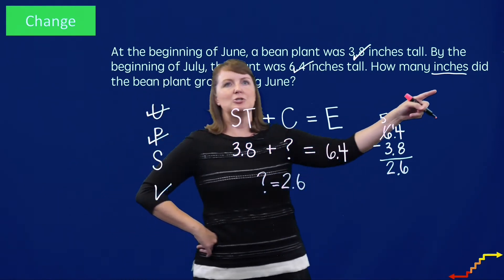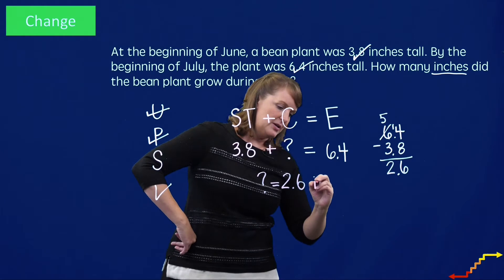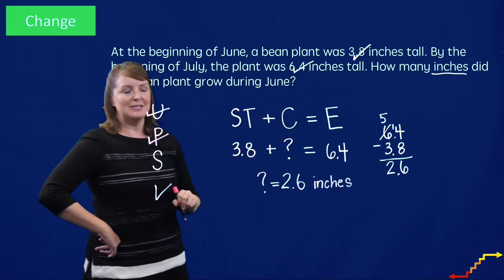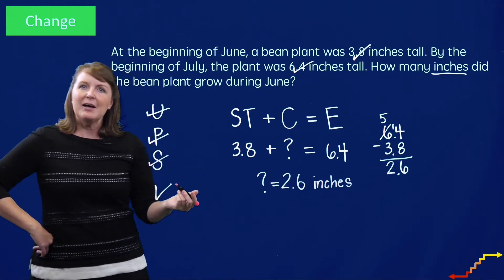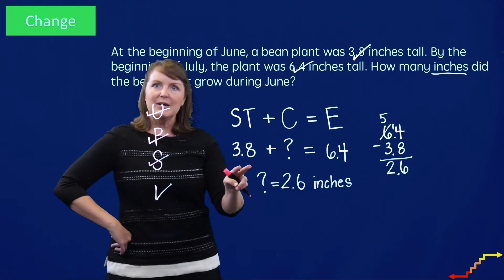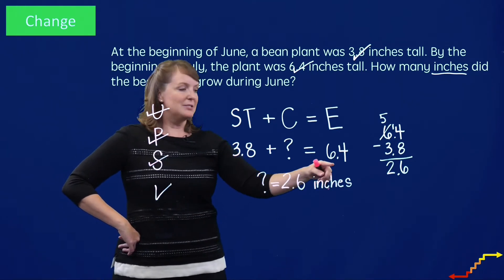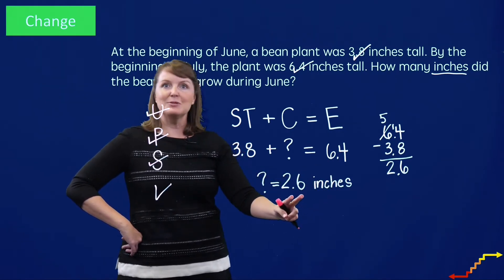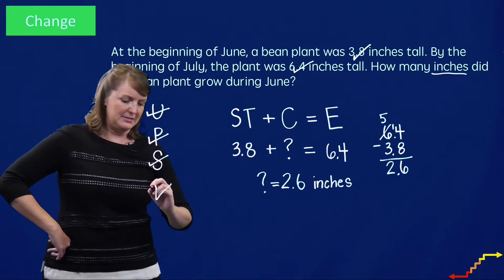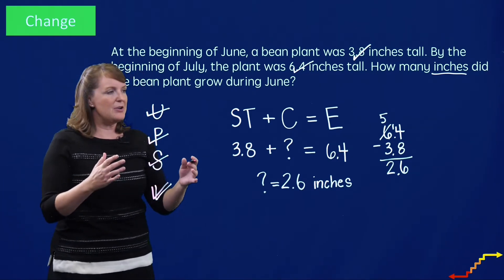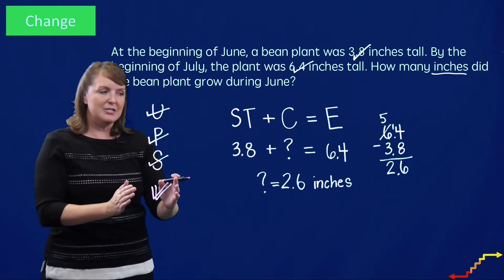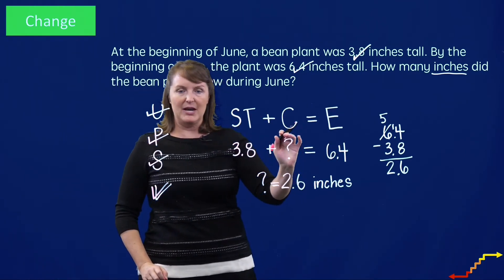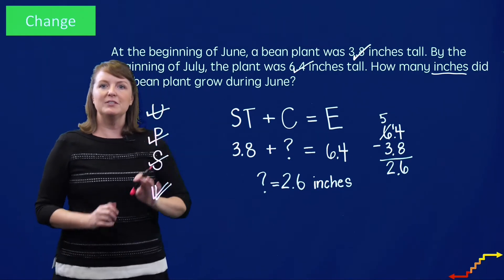What would be a good label? 2 and 6 tenths inches — it's one of the reasons we underline those things at the beginning, because they come back to help us later on. So I've solved this problem. Now let's check the work. I could add 3 and 8 tenths plus 2 and 6 tenths and make sure that equals 6 and 4 tenths. Or subtract 6 and 4 tenths minus 2 and 6 tenths to make sure that equals 3 and 8 tenths. Lots of different ways to check the work. Now you can see how we use our attack strategy combined with the change schema and the change graphic organizer to solve this change problem.